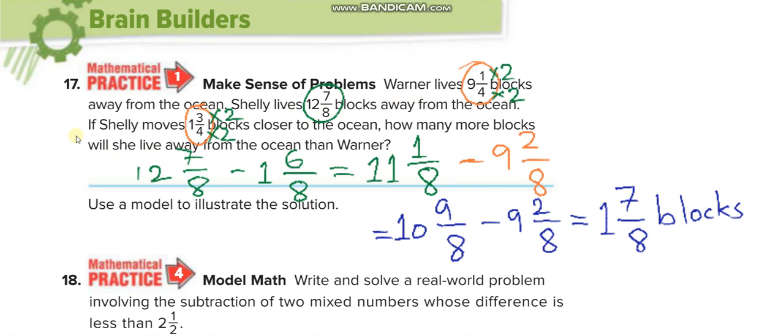So first you minus this one from this, then from the answer you will minus this one, or you can add both of them on board. So here we did it - what we did first, we subtracted 1 3/4 from 12 7/8, but first we make the denominator the same, times 2 up and times 2 down, and then from the answer we minus this one after making the denominator the same.